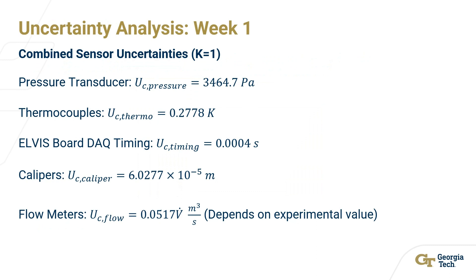These are the combined sensor uncertainties for k equals 1 for each of the sensors. It is notable that pretty much all of these sensors — specifically the pressure sensor, the thermocouples, and the calipers — all have uncertainties about two orders of magnitude smaller than any of the values used in calculations. The timing uncertainty for the Elvis board data acquisition is not useful this week since we are only doing steady state analysis, but it will be helpful next week for transient analysis. It is also notable that the uncertainty for the flow meters depends on the actual flow, so as the flow increases with pressure, there is more uncertainty associated with that.